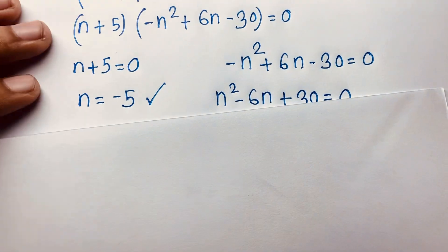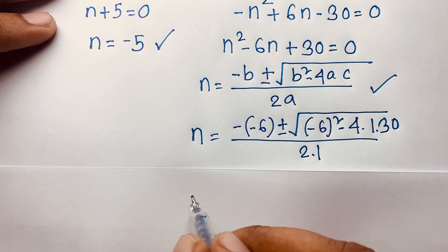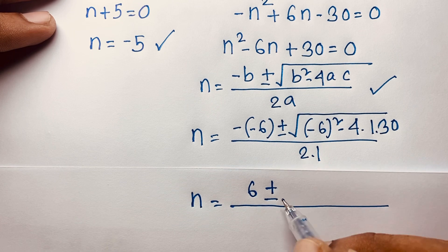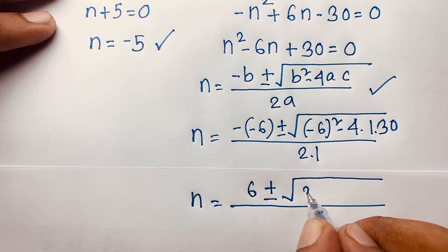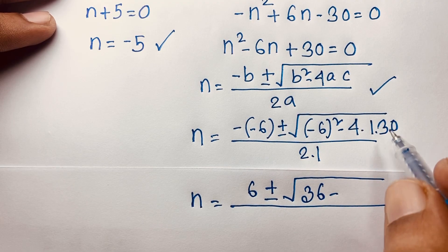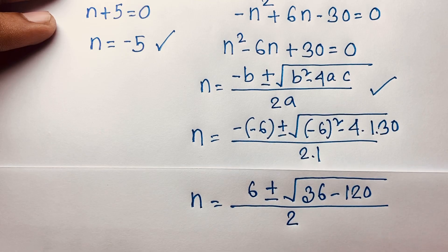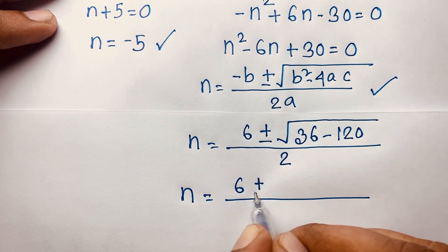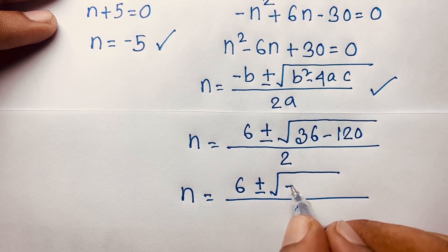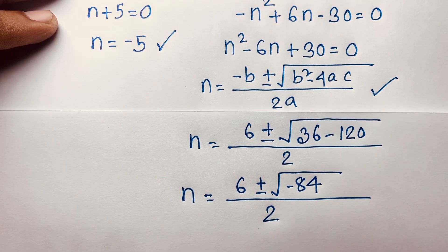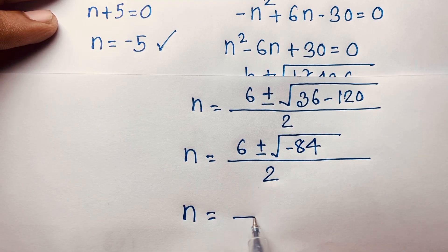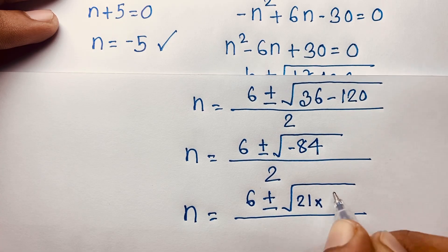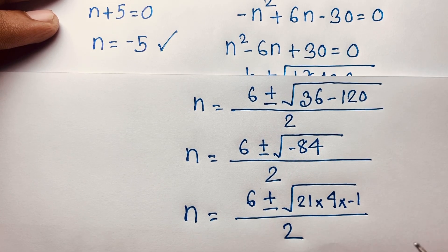This gives n equals 6, plus or minus square root of 36 minus 120, over 2. That becomes n equals 6, plus or minus square root of negative 84, over 2. We can rewrite negative 84 as 21 times 4 times negative 1, so n equals 6, plus or minus square root of 4 times 21 times negative 1, over 2.